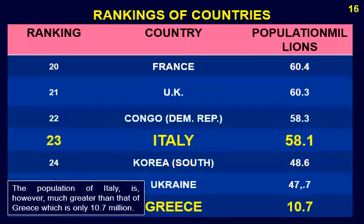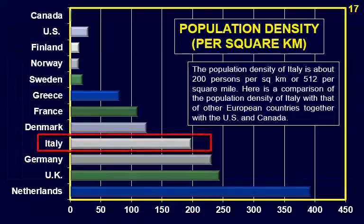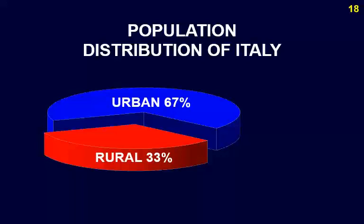The population of Italy is much greater than that of Greece, which is only 10.7 million. The population density of Italy is about 200 persons per square kilometer, or 512 per square mile. Italy is two-thirds urban and one-third rural.